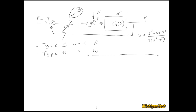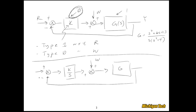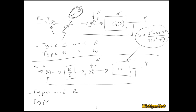Since we need more poles at the origin in the controller, let's make the controller an integrator with gain: K/s. Now the system is type 2 with respect to R (one pole at origin in the controller plus one in the plant) and type 1 with respect to W. This satisfies our design requirements — but now we need to check stability.